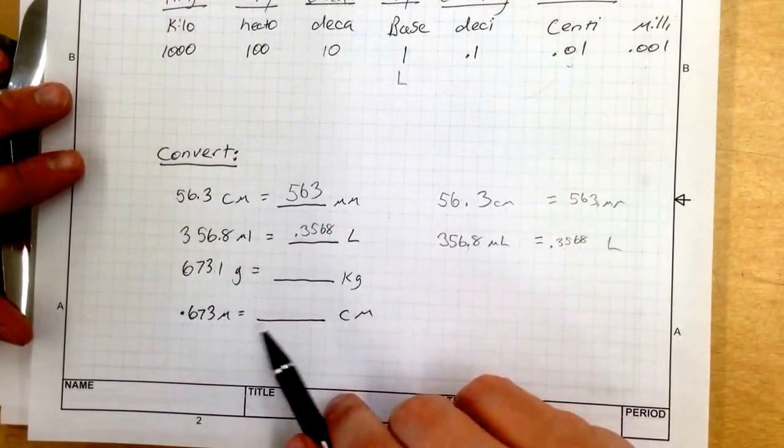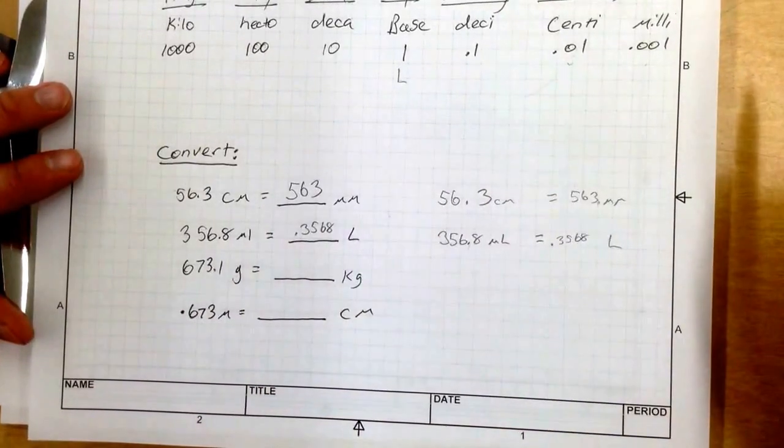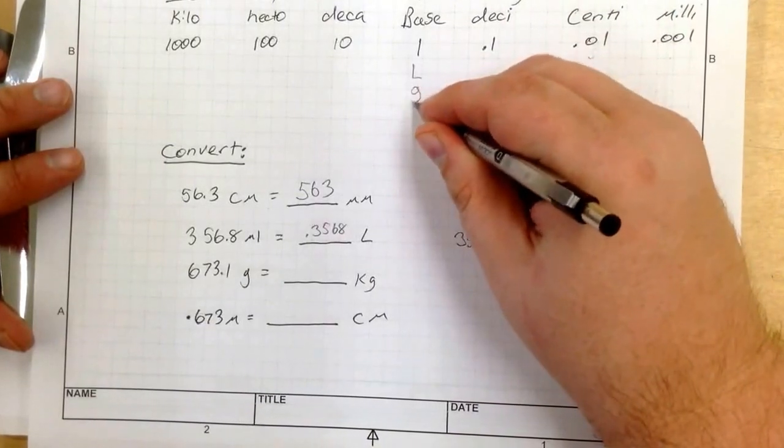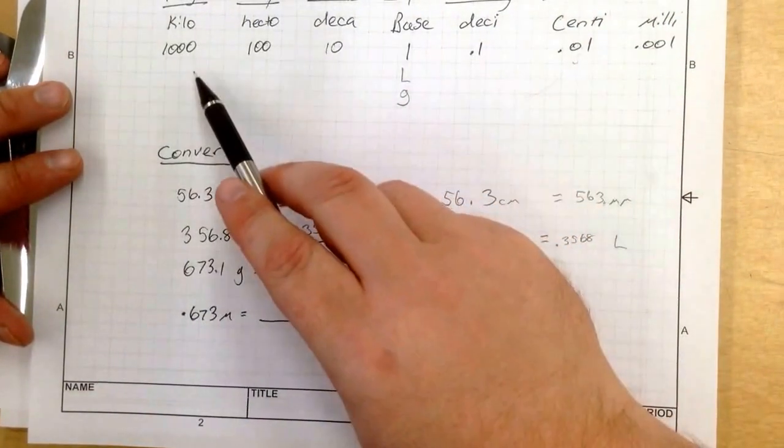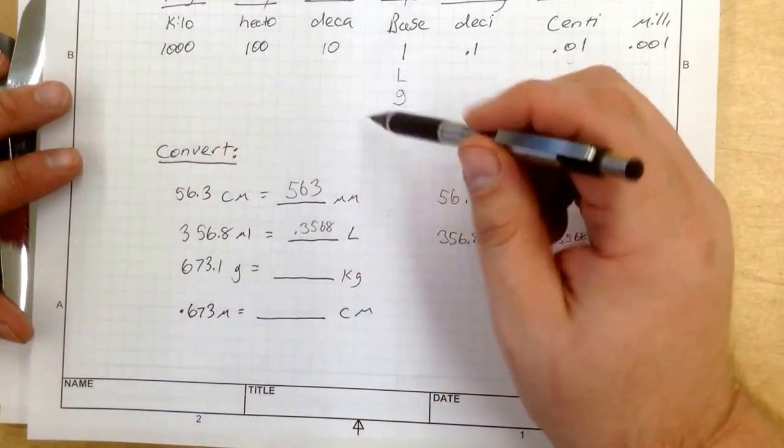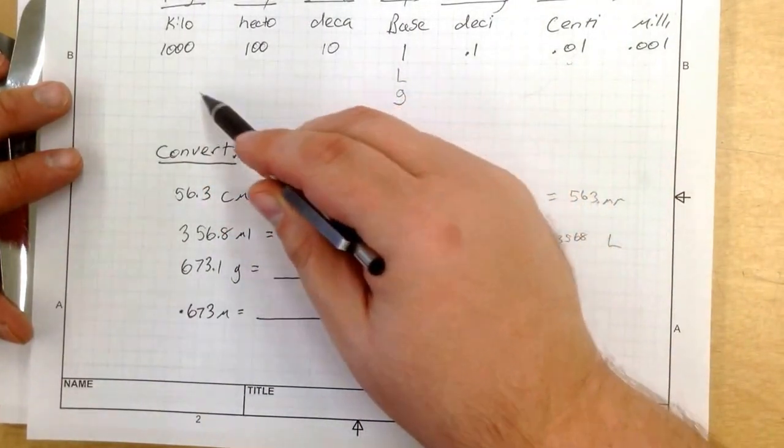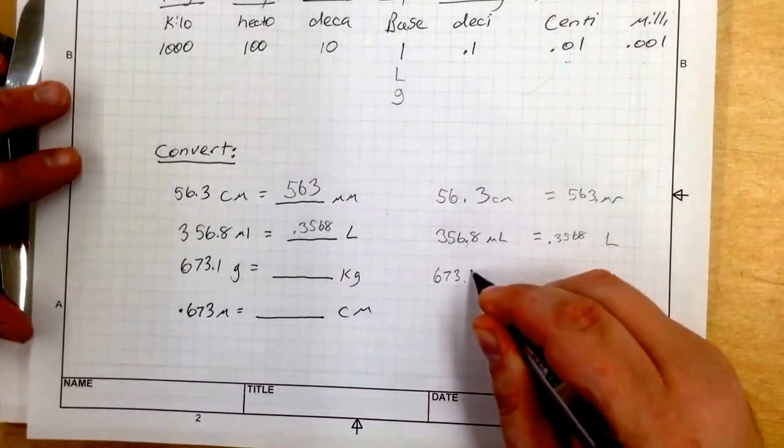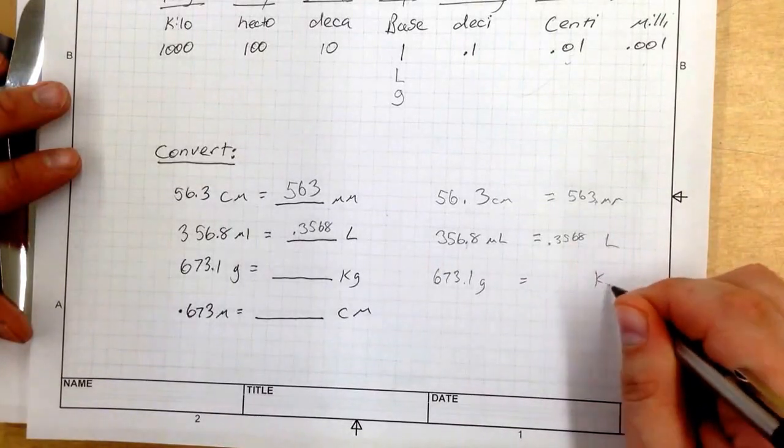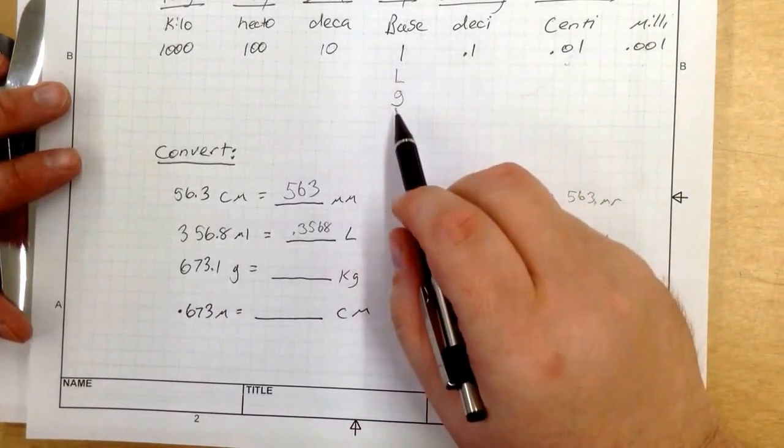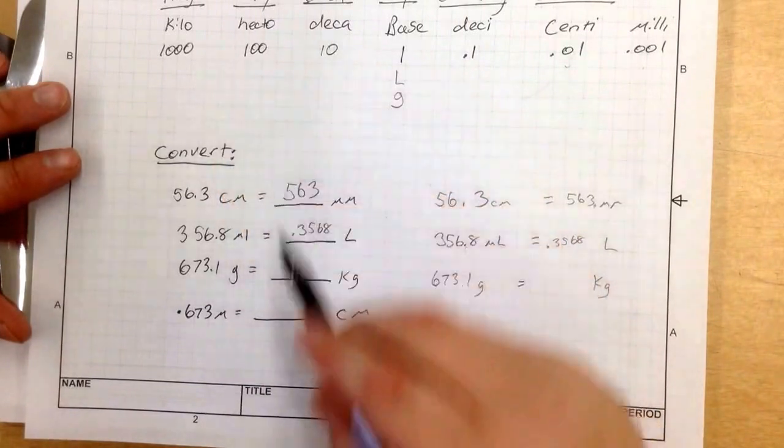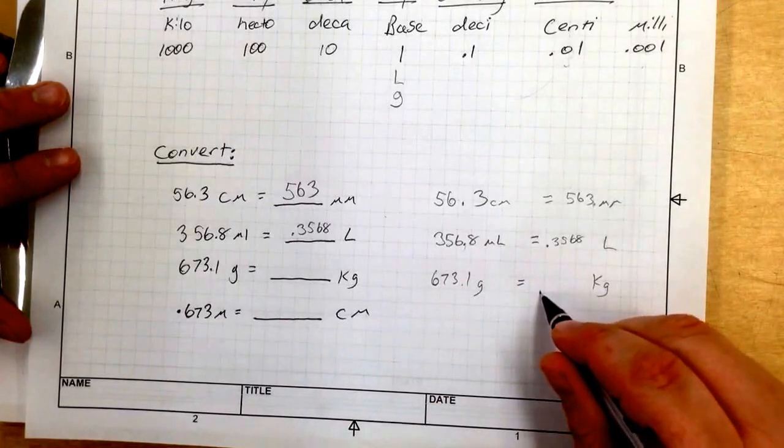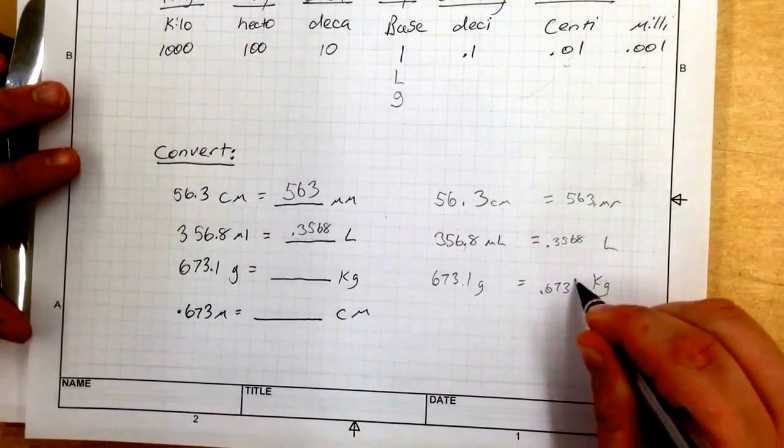Okay, now let's check out grams. 673.1 grams goes to kg. Grams is a base unit. So I've got grams right there. And it wants to go to kilograms right over here. So it is 1, 2, 3 units over. So if I write this down, 673.1 grams equals how many kg? And from my base unit, 1, 2, 3 over. So it's 0.6731 kg.